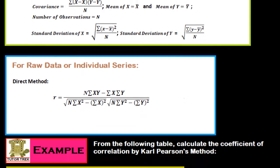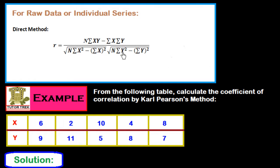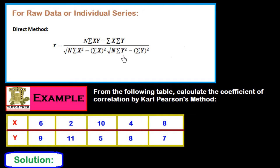Now we see how to find out the coefficient of correlation through raw data or individual series. For the direct method, r is equal to: n times summation of xy minus the product of summation of x and summation of y, over the square root of the product of n and summation of x-squared minus summation of x whole square, multiplied by the square root of the product of n and summation of y-squared minus summation of y whole square.